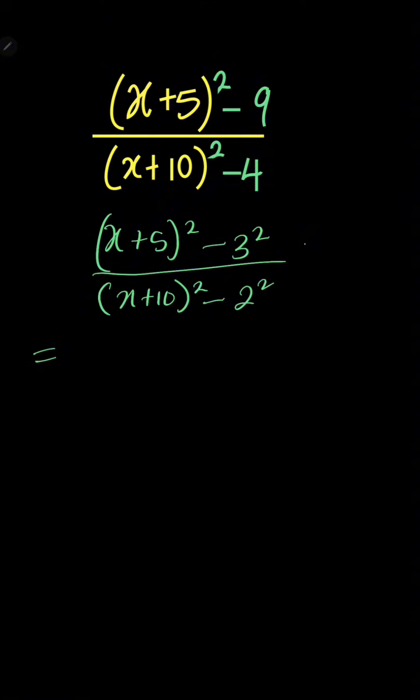So now we have a difference of two squares which we can write as (x+5). Remember, difference of two squares when you have a² - b² is the same thing as (a+b) into (a-b).